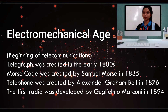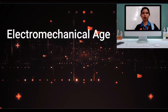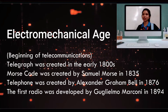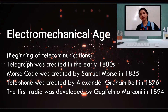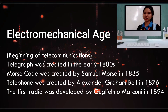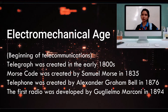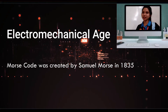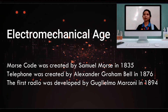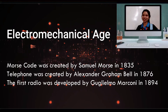The first radio was developed by Guglielmo Marconi in 1894. As a summary of the third age — the electromechanical age, 1840s to 1940s — it is the beginning of telecommunications. Morse code was discovered by Samuel Morse, the telephone was created by Alexander Graham Bell in 1876, and the first radio was developed by Guglielmo Marconi in 1894.